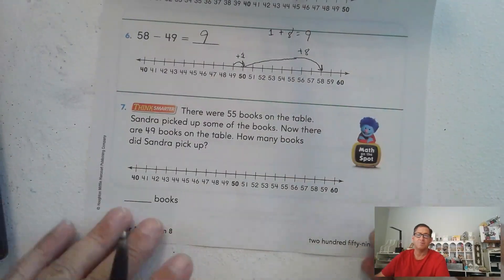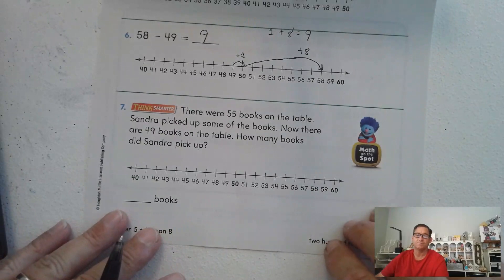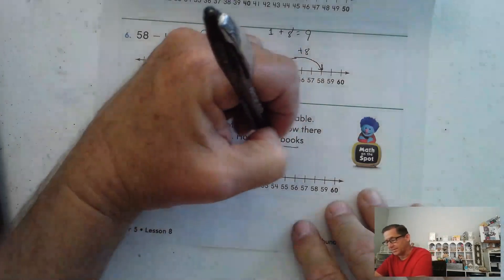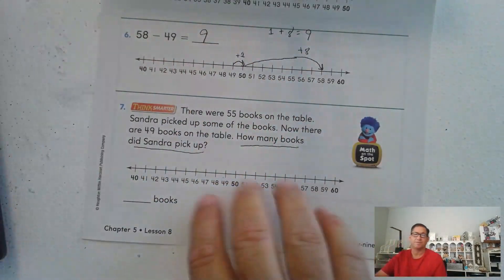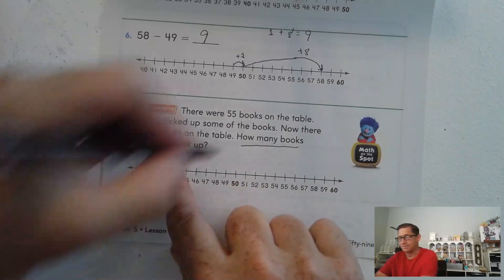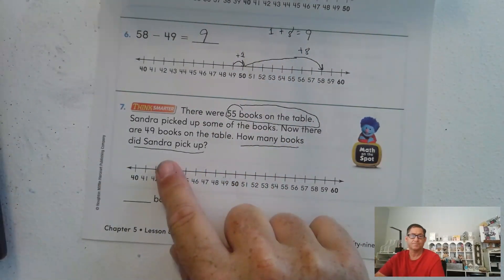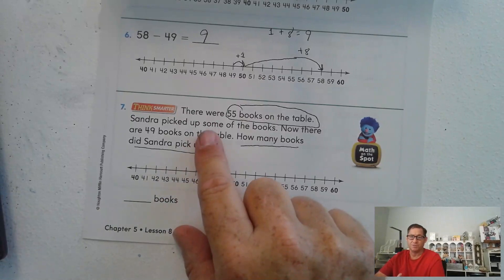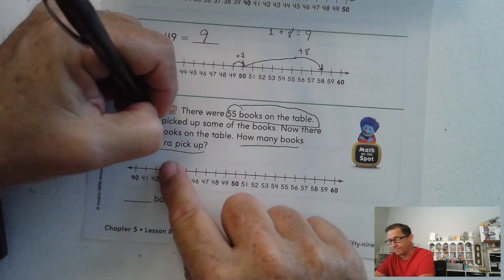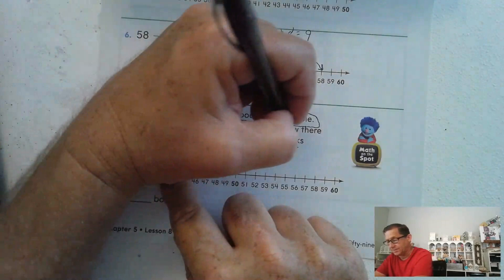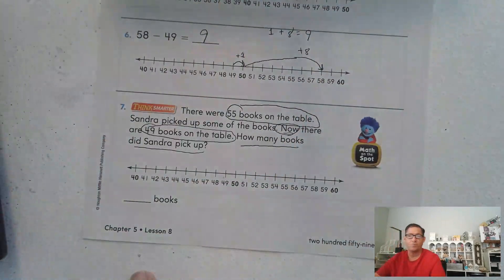Number 7. There were 55 books on the table. Sandra picked up some of the books. Now there are 49 books on the table. How many books did Sandra pick up? So we have to find out how many books Sandra picked up. Well, there were 55 books on the table. She picked up some books. Now there are 49 books on the table.